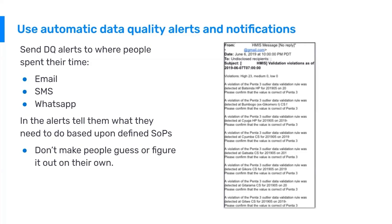Sending it to someone's email where they're checking their email several times a day — maybe that's the first thing they do when they get into the office, or maybe even before they get to the office they're checking their email. One of the emails they're going to see is this alert from DHIS-2 saying there are some validation notifications, some data quality issues. You need to go into DHIS-2 and investigate them or do something about them.